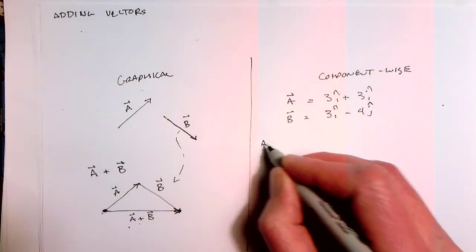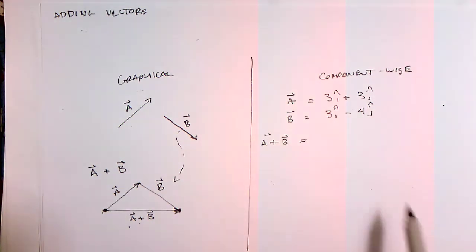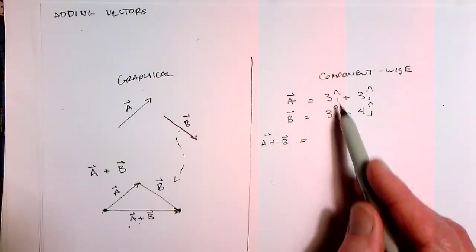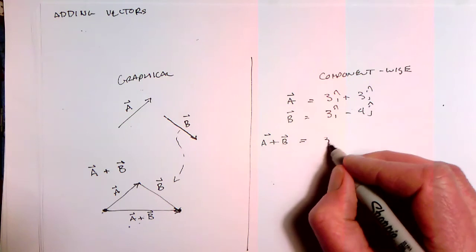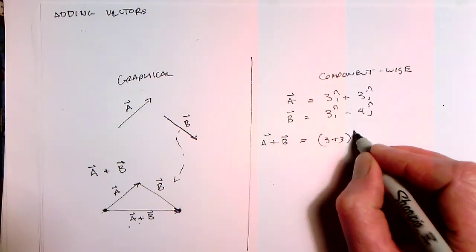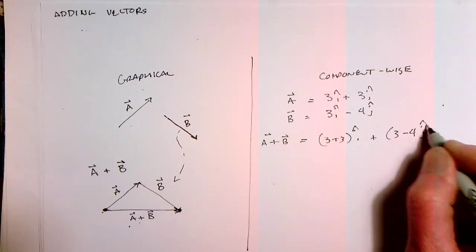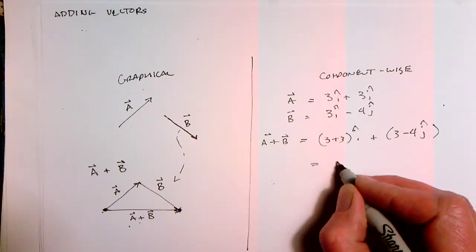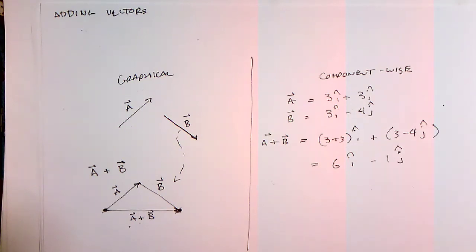Well, if we want to add the vectors A plus B, all we have to do is simply add each of the components. So i hat adds to i hat and j hat adds to j hat. So in this particular case, we get three plus three times i hat plus three minus four times j hat, which gives us a total of six times i hat minus one times j hat.